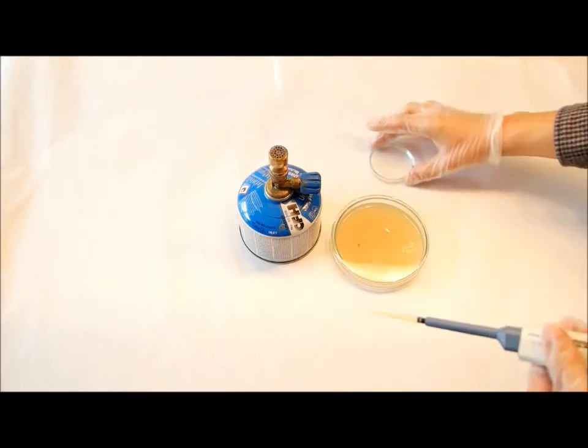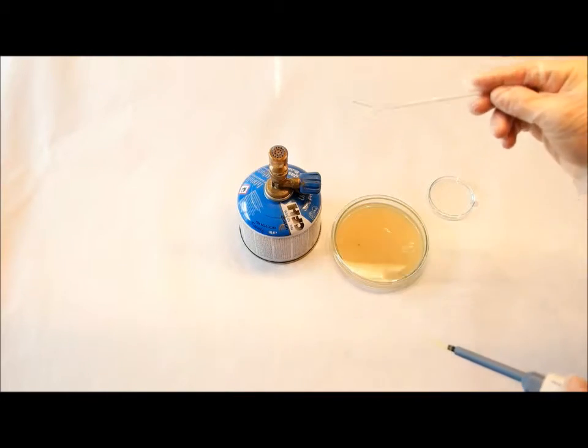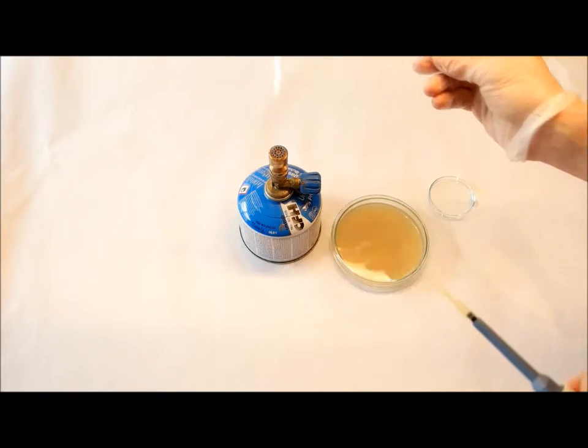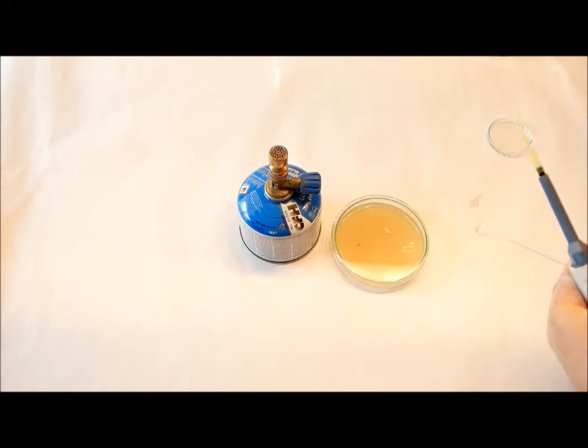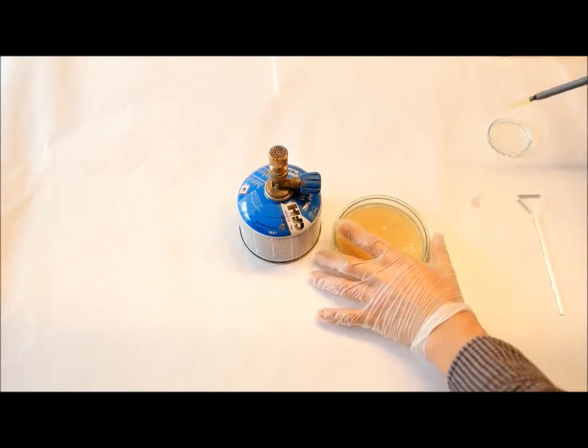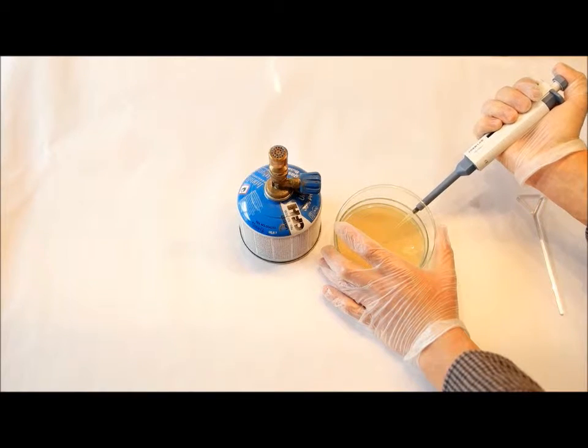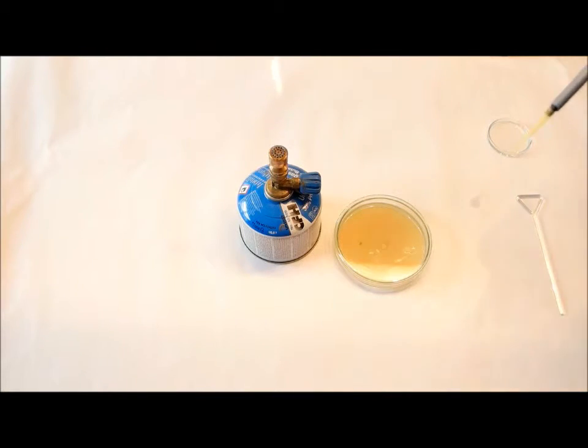Now sterilize your spreader rod by putting it into the ethanol and then just burn it. You can see the flame and now it will be sterilized. But you will do that once again. So put the drop, that 100 microliters of your bacteria mix, in the agar plate. Put away your pipette tip. Sterilize your spreader rod.